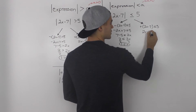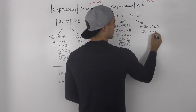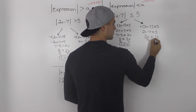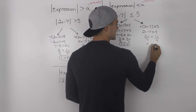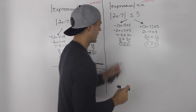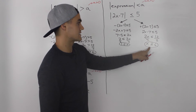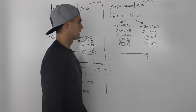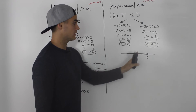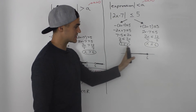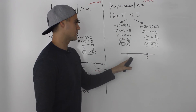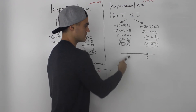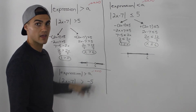For the positive case, the positive just goes away, giving 2x minus 7 less than or equal to 5, so x is less than or equal to 6. When x is greater than or equal to 1 and less than or equal to 6, those solutions satisfy the inequality. On the number line, any x values between 1 and 6 inclusive would work. Because it's inclusive of both 1 and 6, we put solid dots instead of open dots.